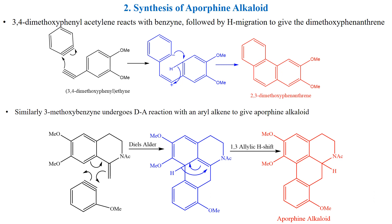For the preparation of aporphine alkaloid, 3-methoxy benzyne undergoes a Diels-Alder reaction with an aryl alkene to produce aporphine alkaloid.